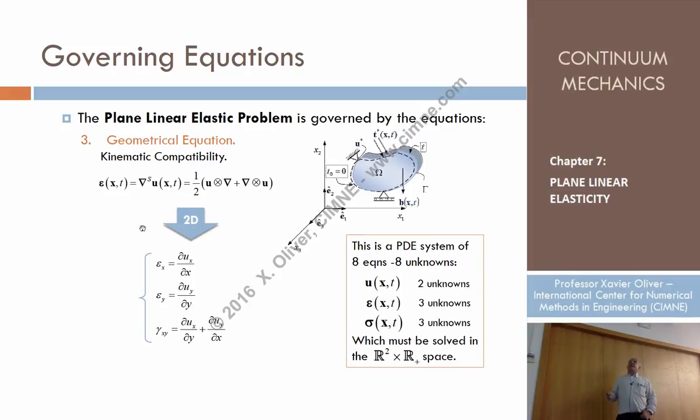The geometrical equation also only involves three equations. The three strains as function of the two different from zero displacements. So finally, we have a set of two unknowns in terms of displacements, the two displacements, three unknowns in terms of strains, and three unknowns in terms of stresses. With how many equations? Three geometrical equations, three stress equations, and three constitutive equations. So we have eight equations and eight unknowns.